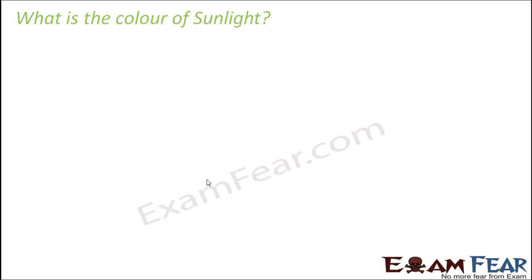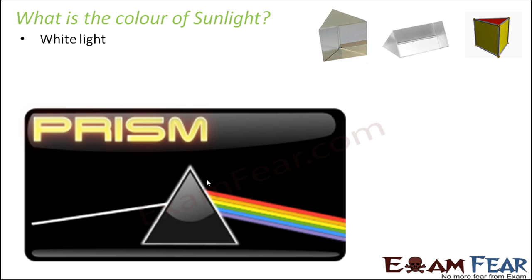Have you ever wondered or observed what is the color of sunlight? If you look at it closely, you would see that sunlight appears to be white in color. So does that mean it is just white color and nothing else? Well, not really.